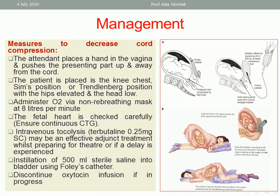By positioning — knee-chest position, Sims' position, or left lateral position — try to push the presenting part away from the cord to minimize cord compression. Give the patient tocolytic drugs that cause uterine relaxation, like terbutaline 0.25 milligrams subcutaneous or intravenous tocolysis.